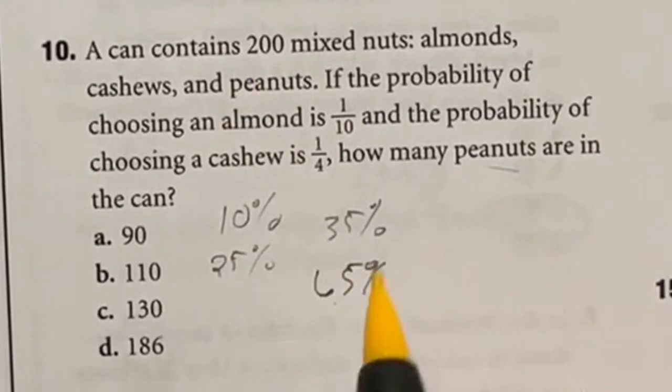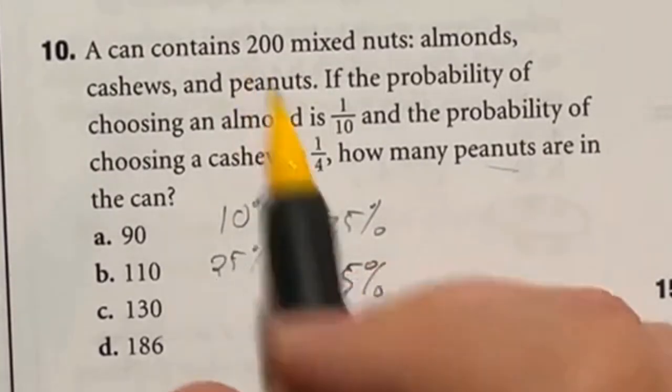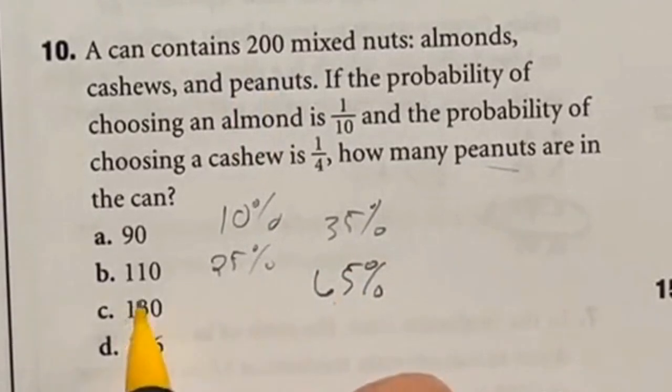So what is 65 of 200? Well 65 out of 100 is 65. Double that to get 200 would be 130. Answer C.